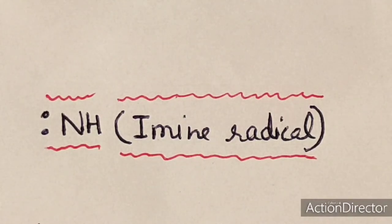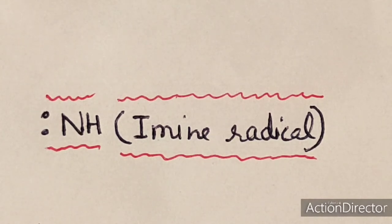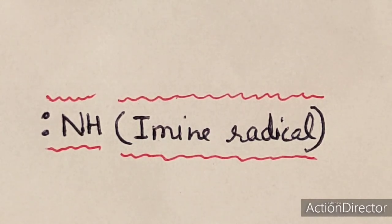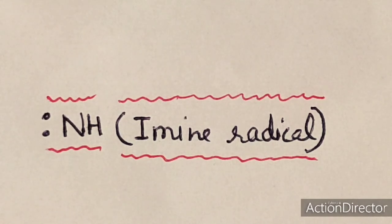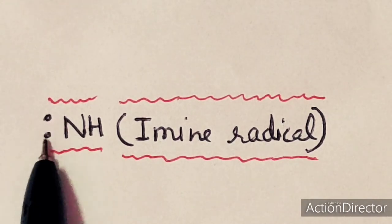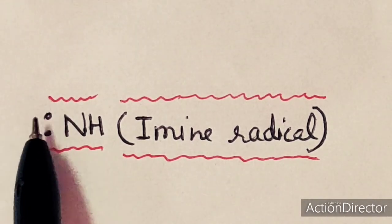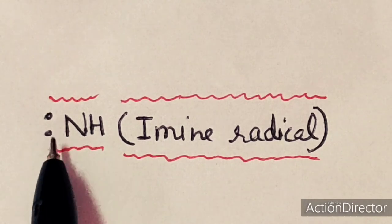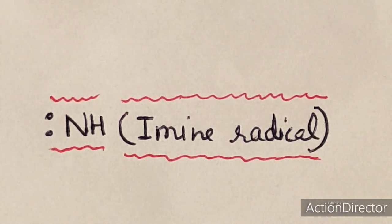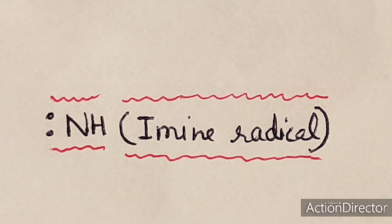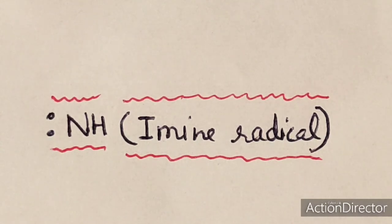Dear students, in this lecture we will discuss about the chemistry of imine radical, that is NH. In this NH, you are observing there are two unpaired electrons. So it is a diradical. And we will study about their production, their properties, and the nature of its ground state in this lecture.